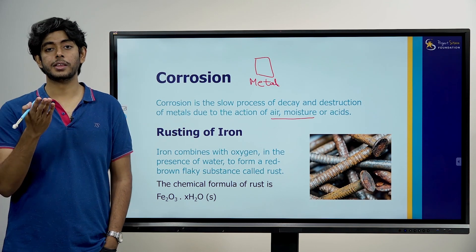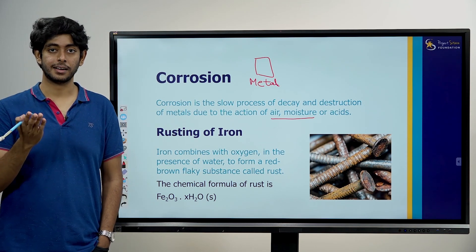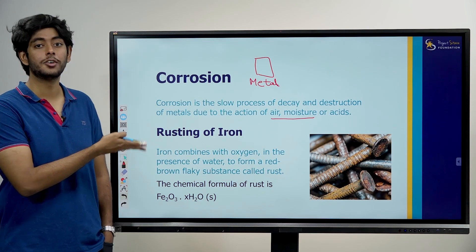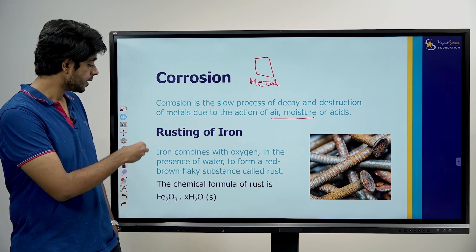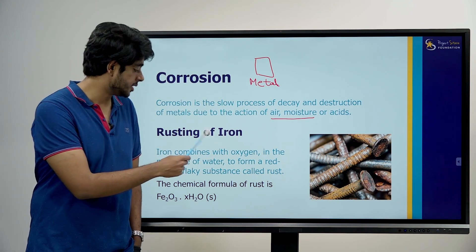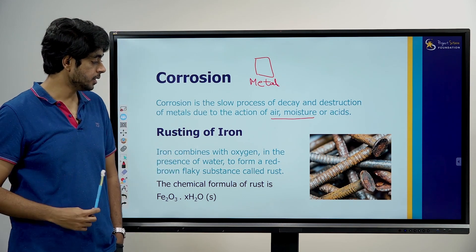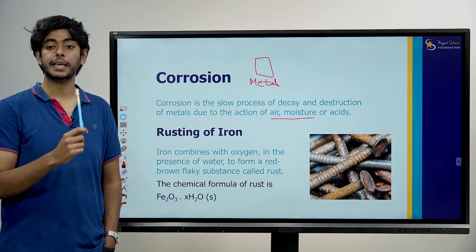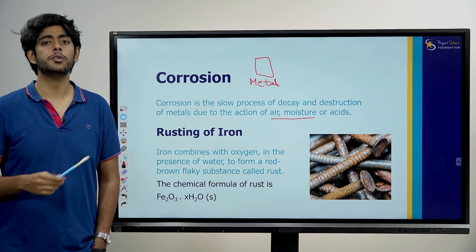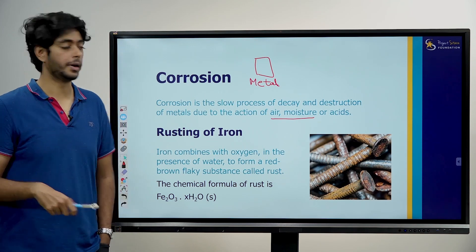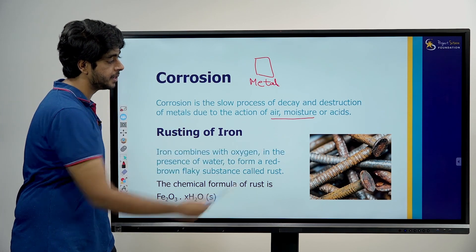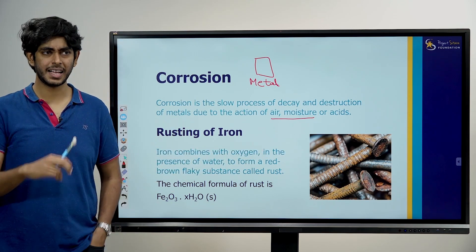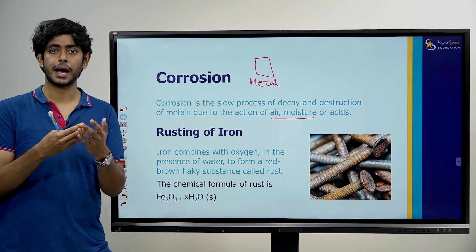Rusting is the rusting of iron. Iron combines with oxygen in the presence of water to form a red flaky substance called rust. If you go to your metal doors or iron nails and observe, you'll see a red layer has formed — that's rust.